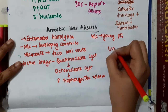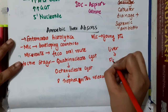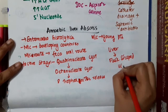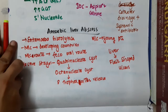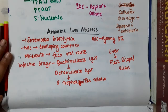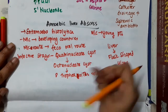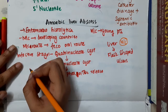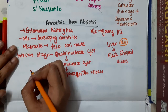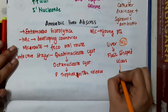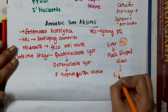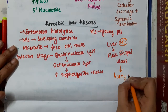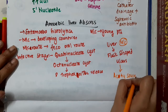In the liver, Entamoeba histolytica causes flask-shaped ulcers. These flask-shaped ulcers express a type of pus which is called anchovy sauce pus.